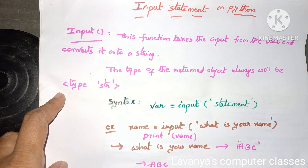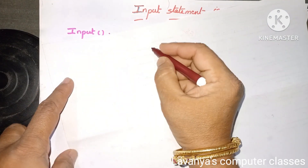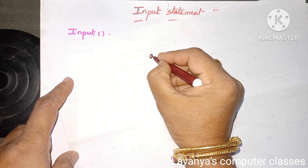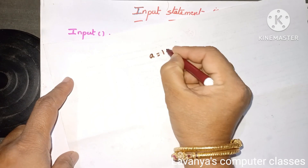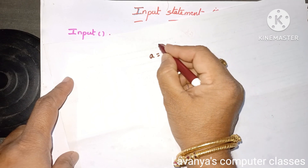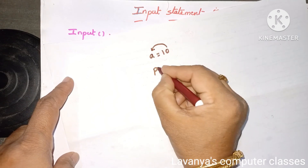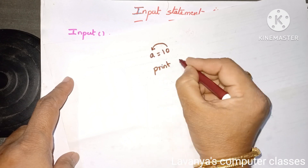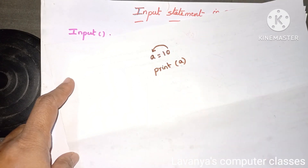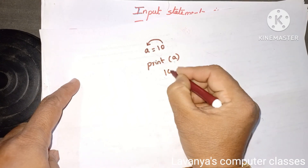Direct assignment method means, for example, if I want to give value 10 to the variable a, then we write a equal to 10. A equal to 10 means the value 10 is assigned to the variable a. If you want to print the value, we use the print function — print a — and the value 10 is printed.